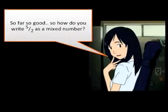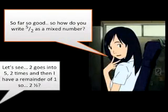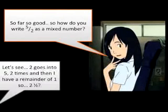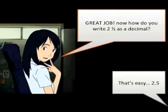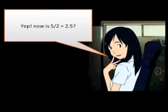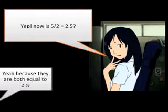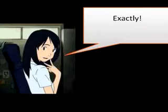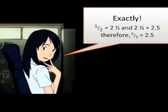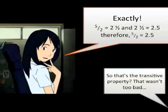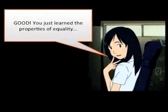So how do you write five over two as a mixed number? Let's see — two goes into five two times, and then I have a remainder of one, so two and a half. Great job. Now how do you write two and a half as a decimal? That's easy — two point five. Now, is five over two equal to two point five? Yeah, because they are both equal to two and a half. Exactly. Five over two equals two and a half, and two and a half equals two point five. Therefore, five over two equals two point five. So that's the transitive property? That wasn't too bad.